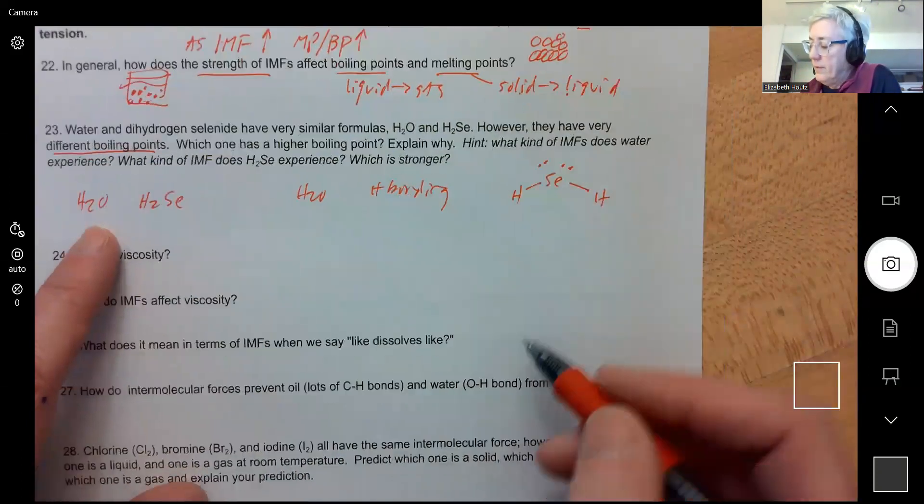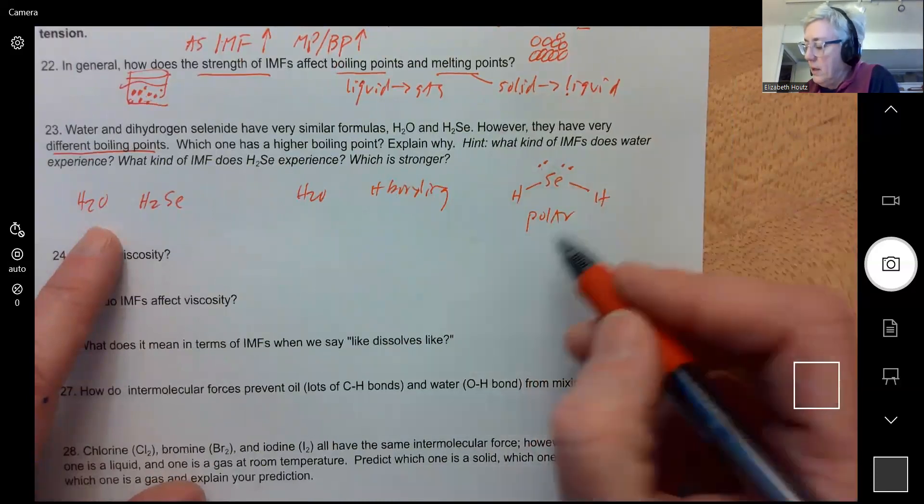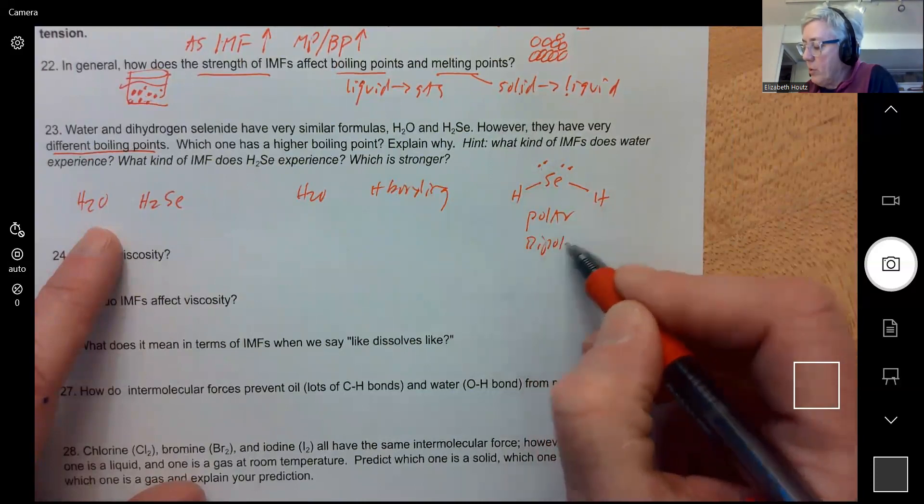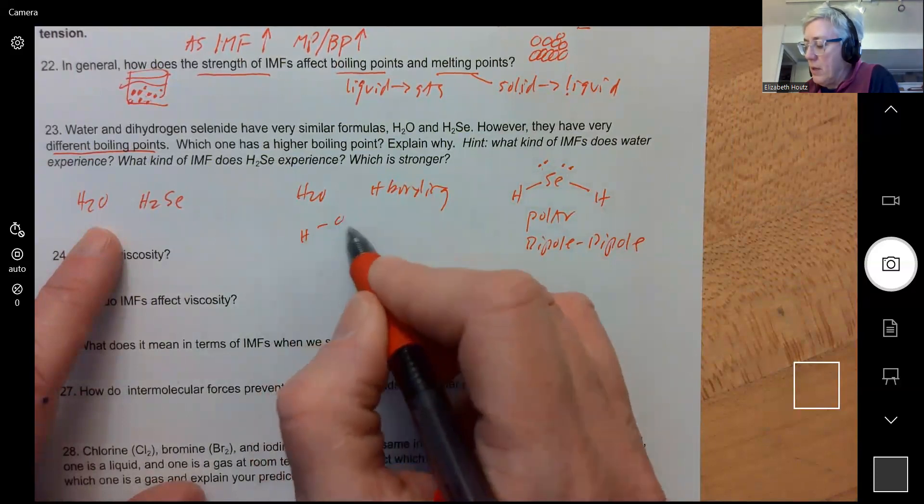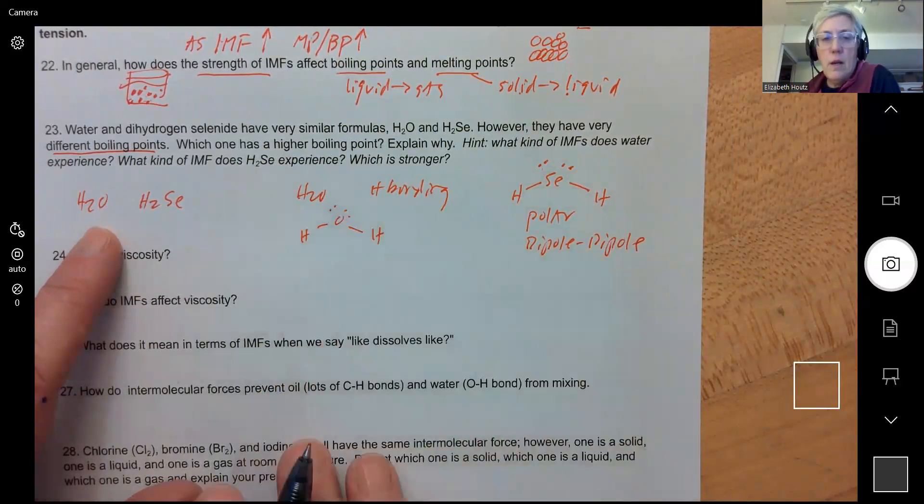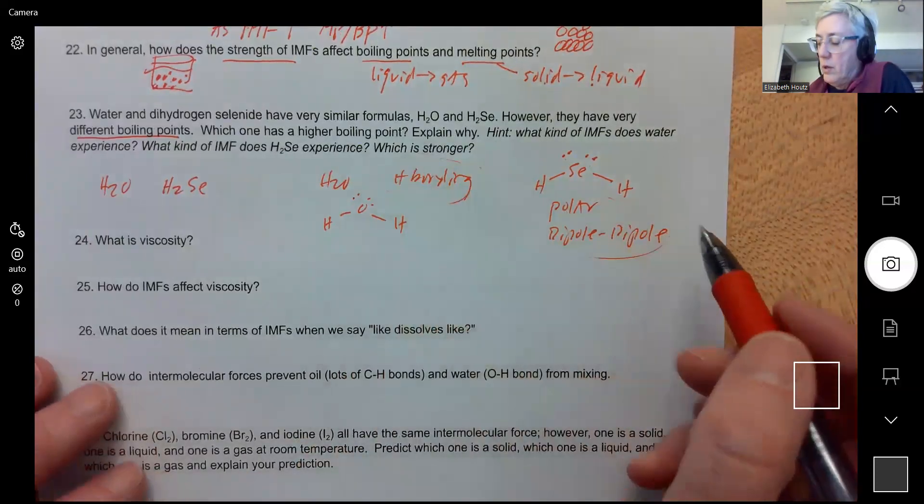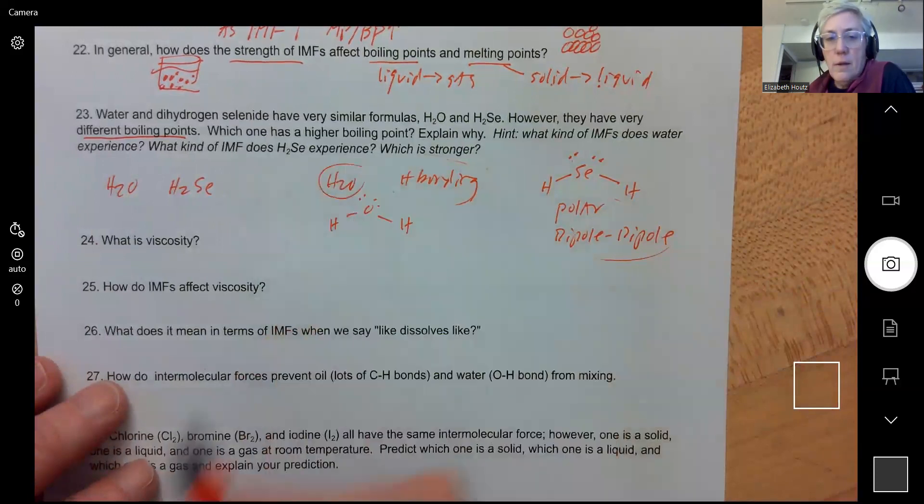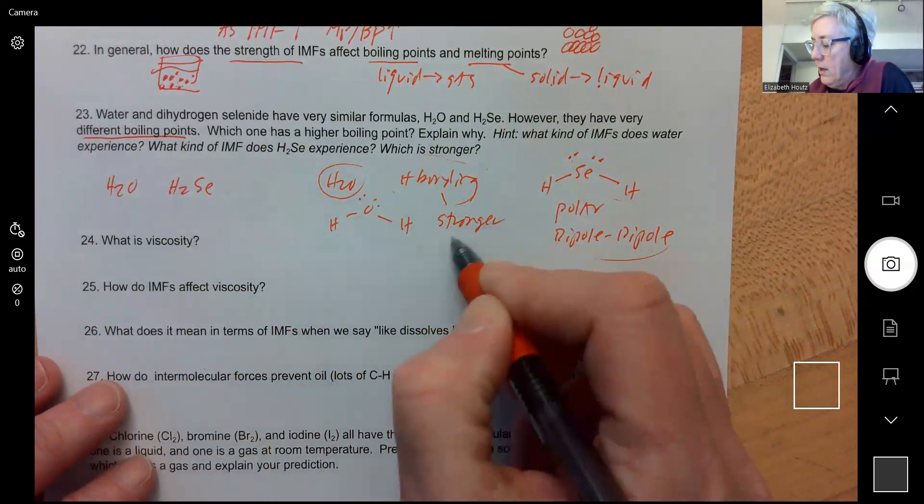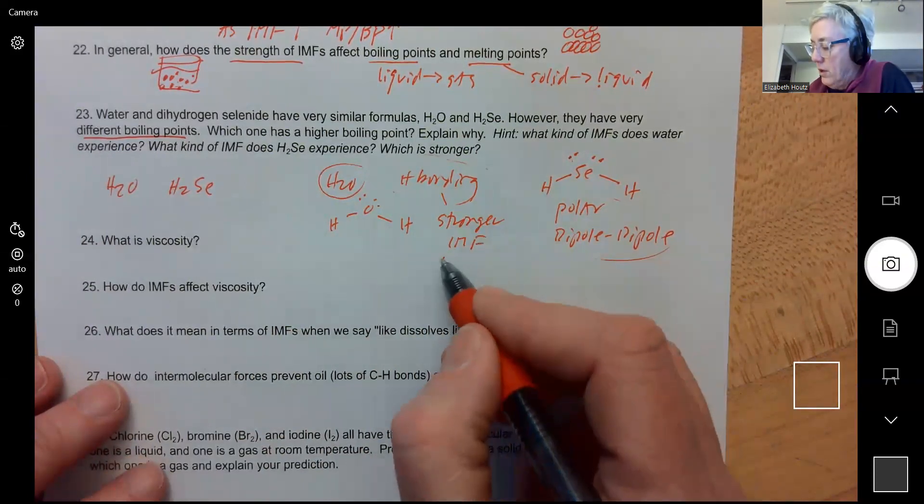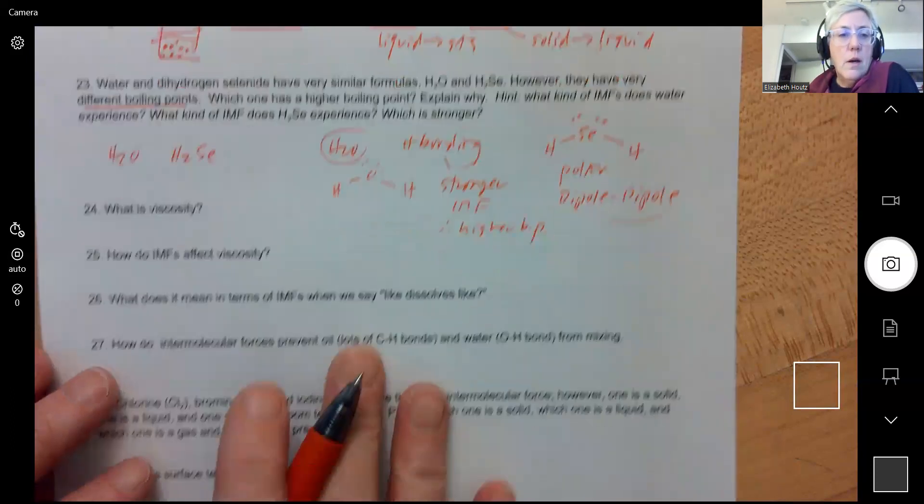H2SE, if you had to draw it, it would look like this. So it's polar. We've got lone pairs on that central atom, so this molecule is polar. So it's going to experience dipole-dipole forces. But water has H bonded to O, which is going to give it hydrogen bonding. And hydrogen bonding is stronger than dipole-dipole, which is why water has a higher boiling point. So I'll say stronger IMF, therefore higher boiling point.